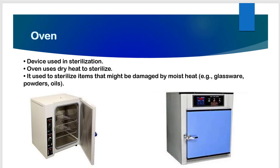The next equipment is the oven. It is basically a device used for sterilization as well as for drying general items used in the microbiology lab. The oven uses dry heat to sterilize — it would take roughly four hours at 100 degrees Celsius to sterilize glassware kept inside. It is used to sterilize items that might be damaged by moist heat, for example glassware, powders, oils, and similar materials.